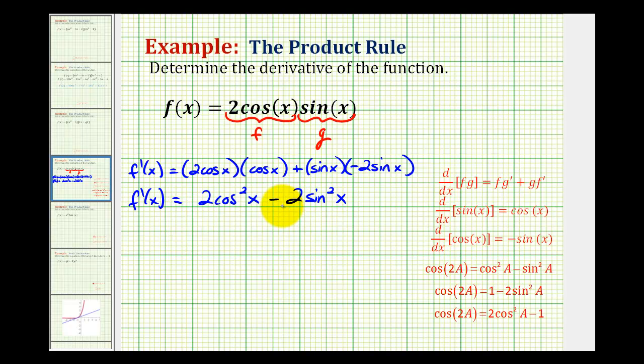Notice how these two terms have a common factor of two. So if we factor out the two, we would have 2 times the quantity cos²x minus sin²x.